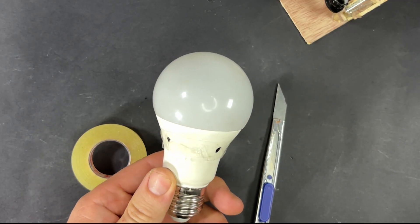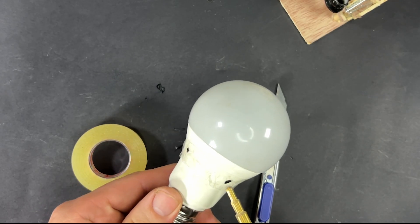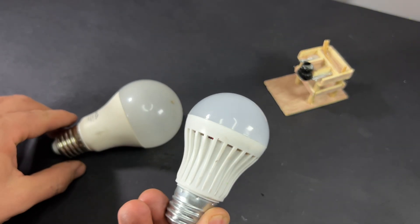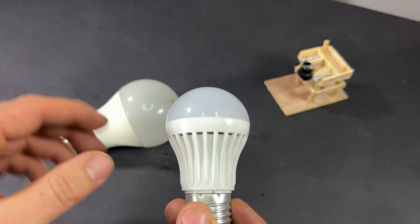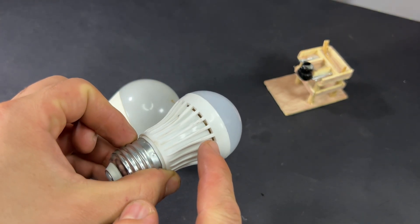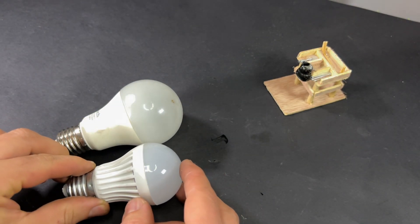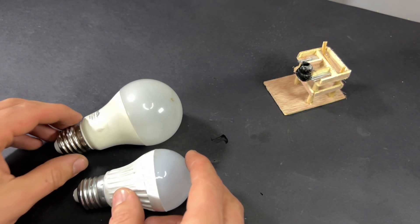Now you're probably wondering, why does this work? Well, the holes provide ventilation, which reduces overheating—the number one reason LED bulbs fail. Higher-end bulbs come with built-in cooling features like fins and airflow vents, but this simple DIY hack gives your cheaper bulbs the same advantage.